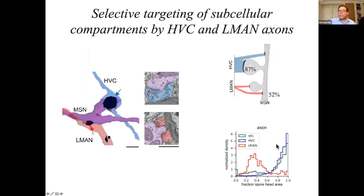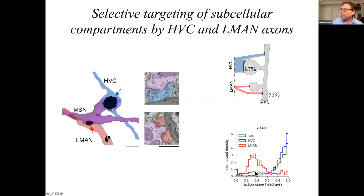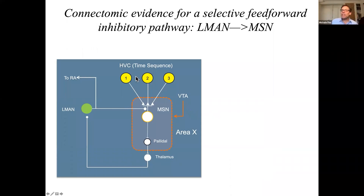A detailed quantification of the L-MAN and HVC synaptic contacts onto medium spiny neurons reveals that, as predicted, the vast majority of HVC inputs terminate on dendritic spines and the majority of L-MAN inputs terminate on medium spiny neuron dendritic shafts. More detailed quantification for each axon of the fraction of spine head area that their presynaptic boutons contact reveals that HVC axons have a very high fraction of spine head area in their postsynaptic context, whereas L-MAN axons have a much smaller fraction of spine head area.